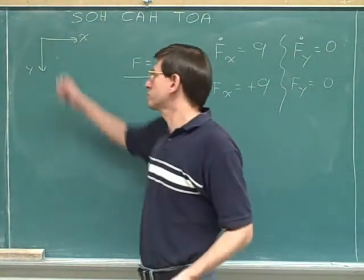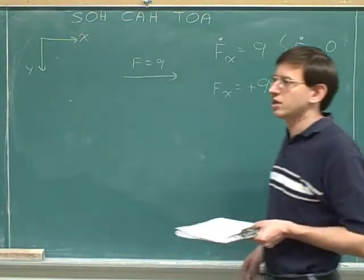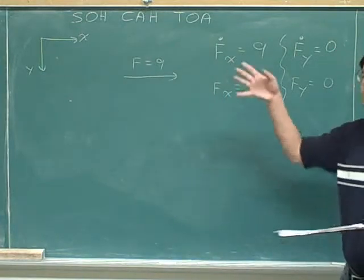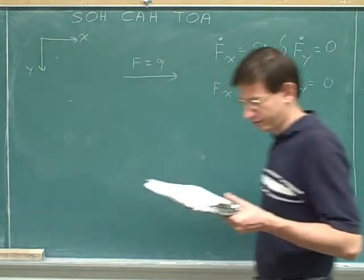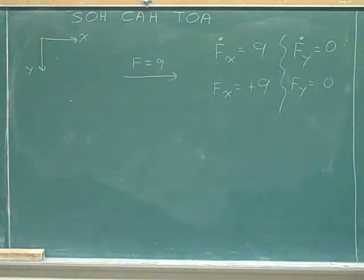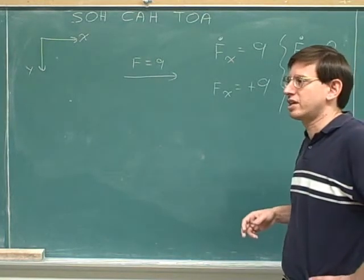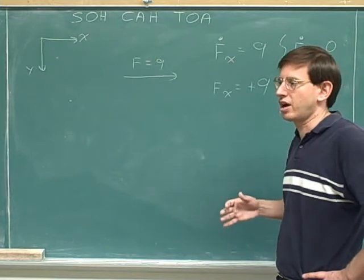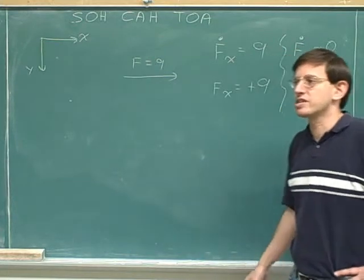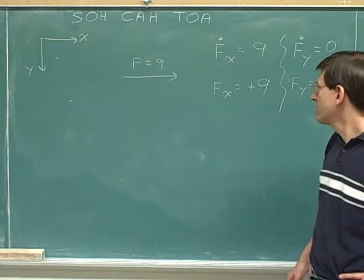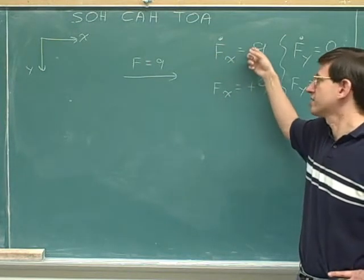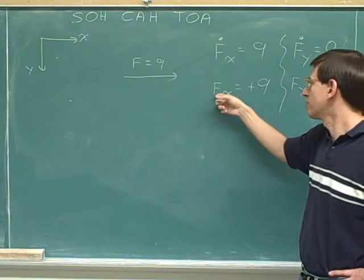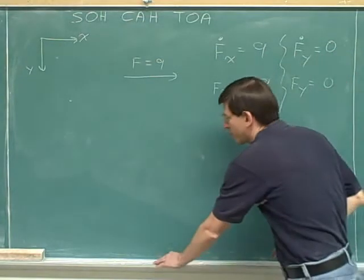Remember, the first thing you should do in this problem is write down the positive directions. Your work is meaningless unless you can point to the positive directions and say this is plus 9 in this positive direction. These problems with overall vectors that only have one component hopefully have made it clearer what the distinction is between a component with a dot and a component without a dot. The component with the dot is just the magnitude or the length, and the component without the dot is the signed component.